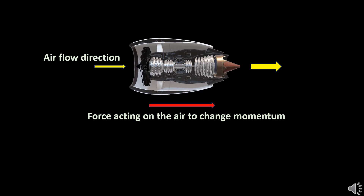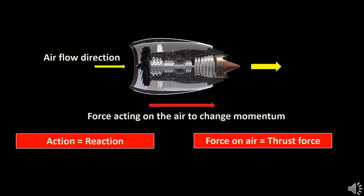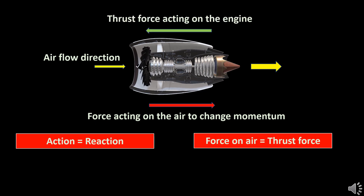Now Newton's Third Law of Motion comes into picture. The air which experiences the force will apply an equal and opposite force on the engine. This opposite force acts in the opposite direction of air flow — that is, in the forward direction. This is the thrust force propelling the aircraft forward, and this is the reason for increasing the air velocity.